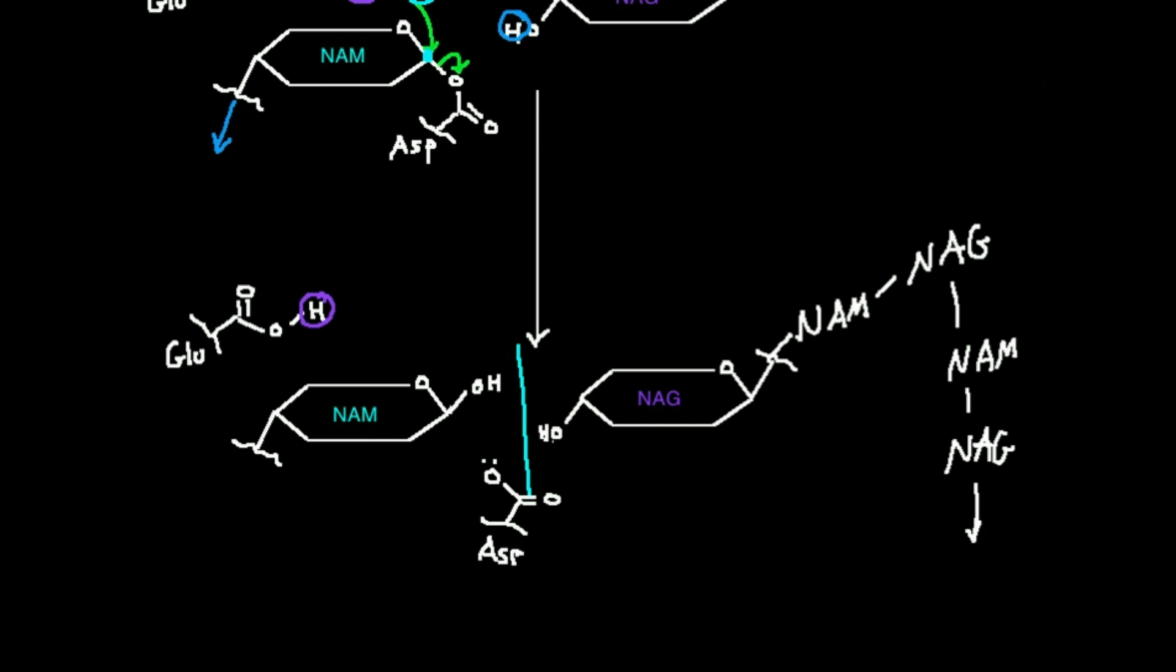We only split NAM-NAG bonds. And when I say that, I mean we're reading the carbohydrate this way. This is the way we're reading it. So which of those bonds are going to get split? Will this bond? No, because it's a NAG-NAM bond. But this one right here, this is a NAM-NAG bond. That's going to get split. And the only other one here that I've indicated is this one. That one's going to get split.